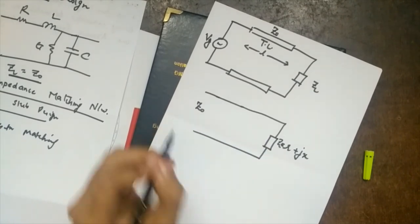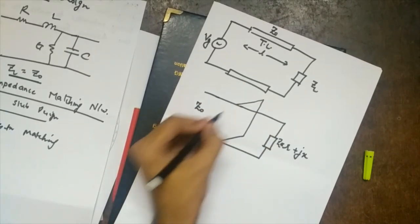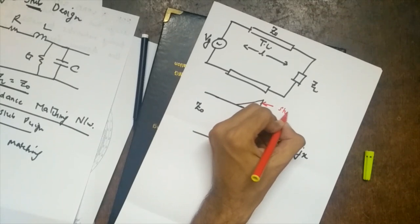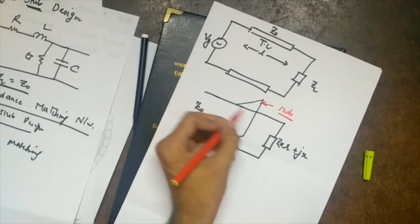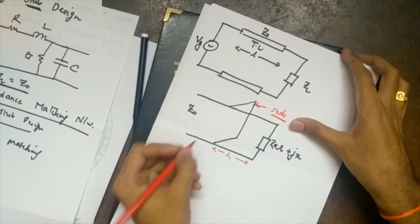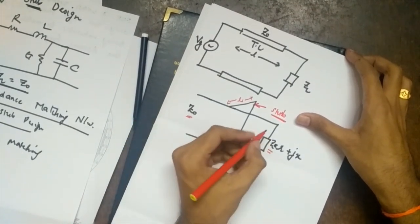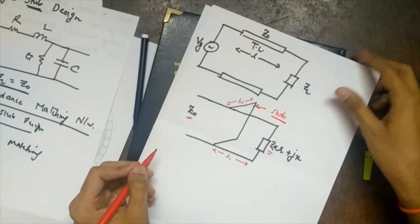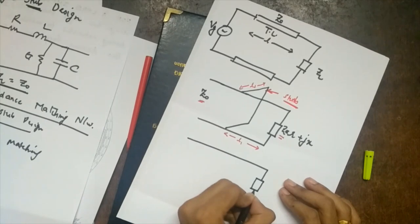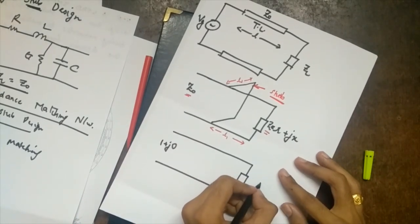Since ZL is not equal to Z-naught, we introduce a stub in parallel — this is a single stub. If two stubs are added, it is double stub. The stub is at a distance l1 from the load and has a length ls. Because the stub is connected in parallel, adding admittances is easier than impedances. So we convert ZL to admittance YL-bar equal to g plus jb on the Smith chart.